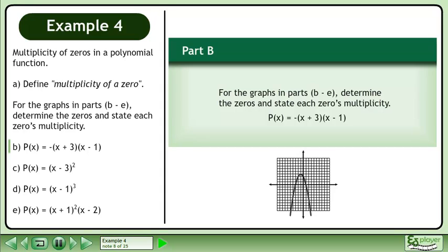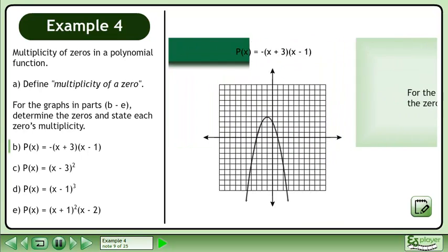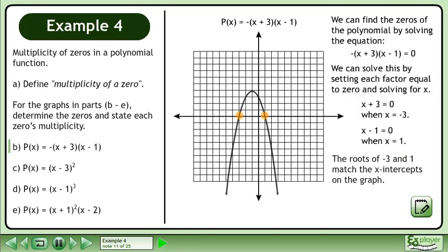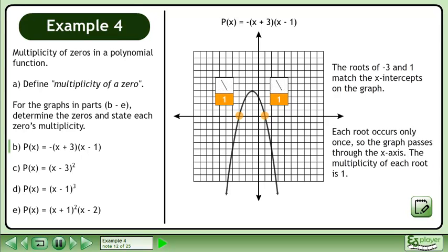For the graphs, determine the zeros and state each zero's multiplicity. In part A, we have the graph of p(x). We can find the zeros by solving the equation negative 1 times (x + 3) times (x - 1) = 0, by setting each factor equal to 0 and solving for x. x + 3 = 0 when x = -3, and x - 1 = 0 when x = 1. The roots of -3 and 1 match the x-intercepts of the graph. Each root occurs only once, so the graph passes through the x-axis. The multiplicity of each root is 1.